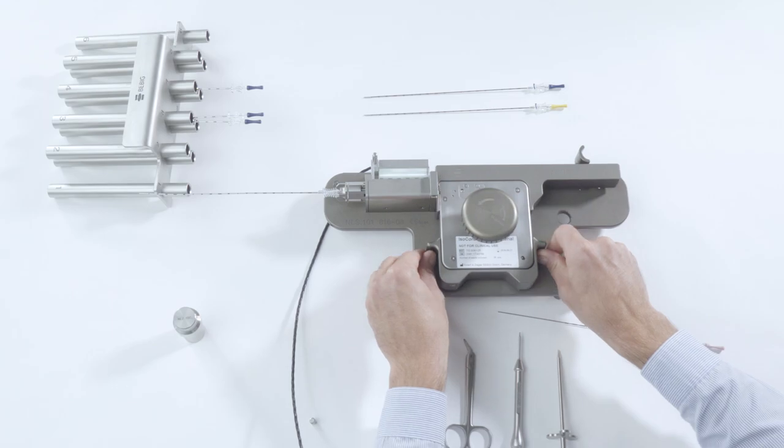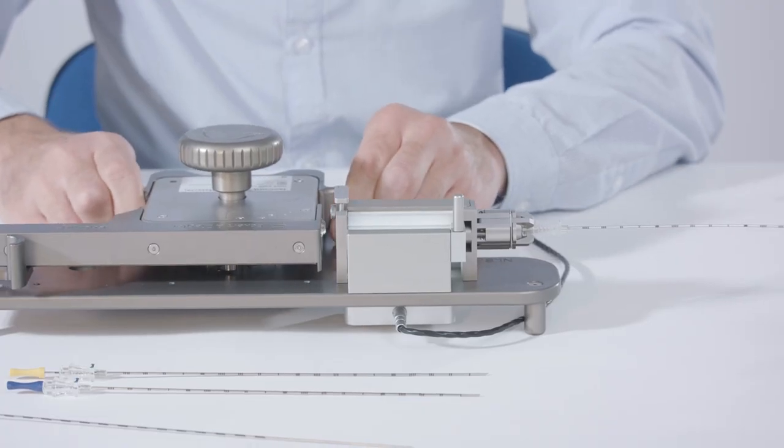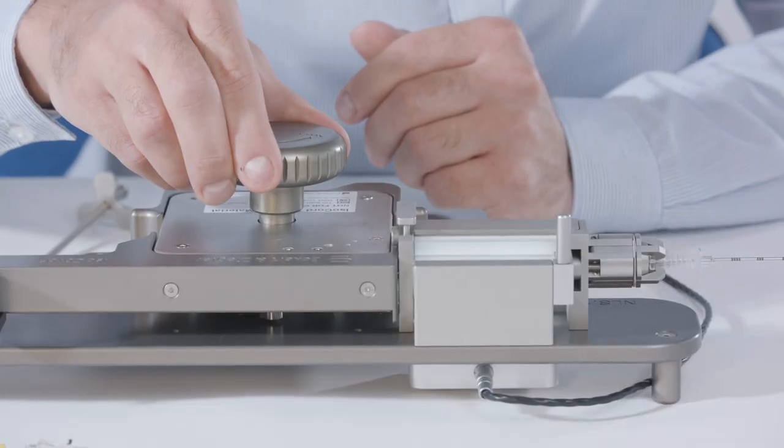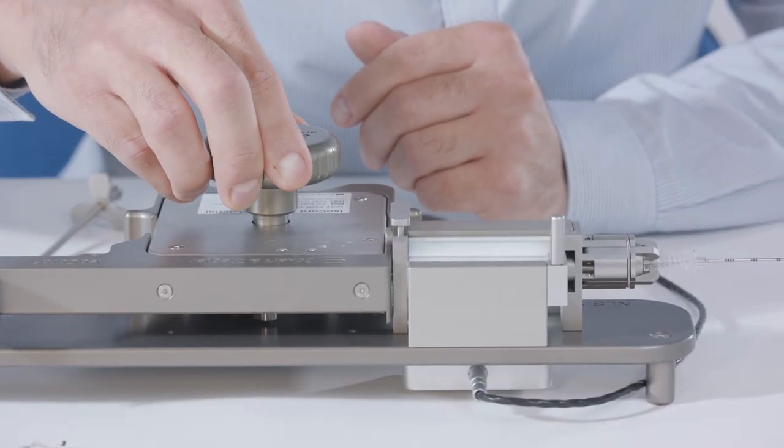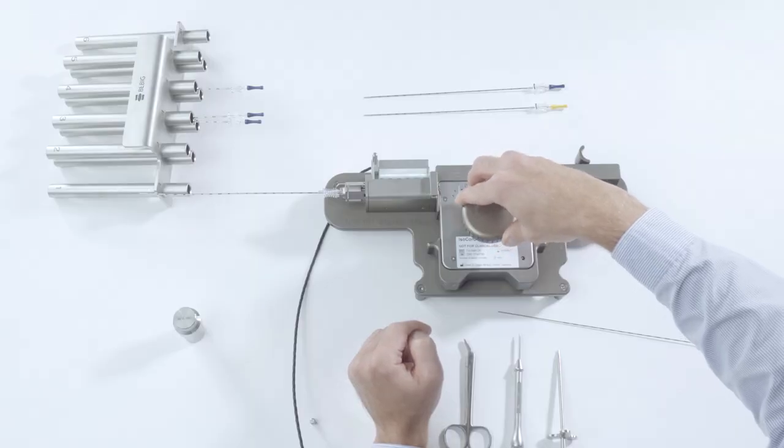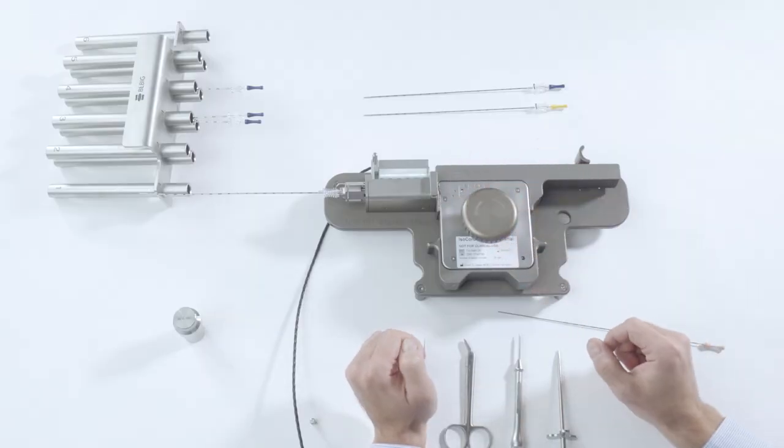Next, configure the seed chain by moving the magazine holder with your thumbs from the mandrel position to the isocord position. This position is reached when the magazine holder is flush with the cutting system and the ball catch clicks back into place. Turn the knob counter-clockwise in the direction marked needle to move the seed chain out of the magazine.